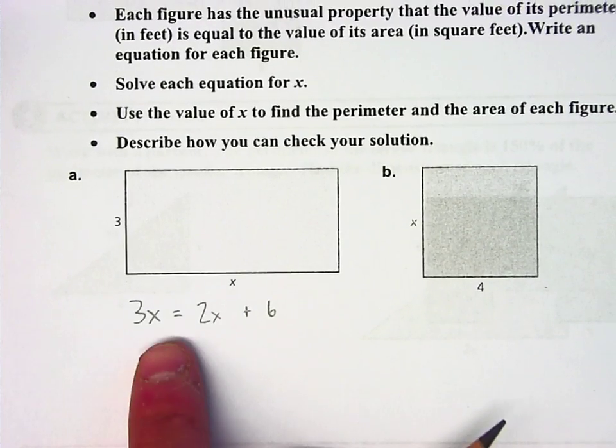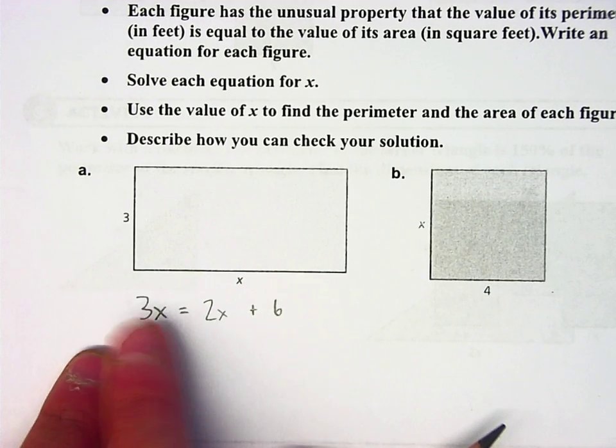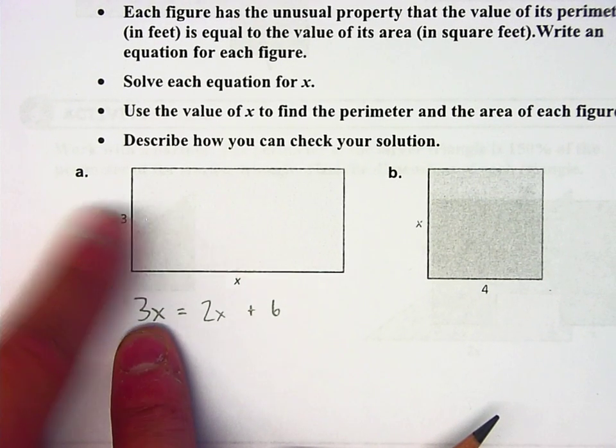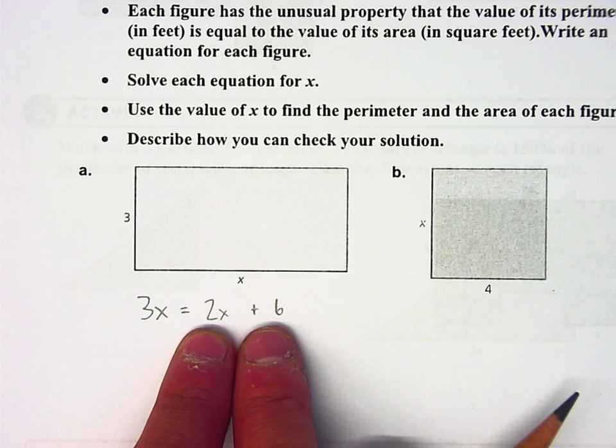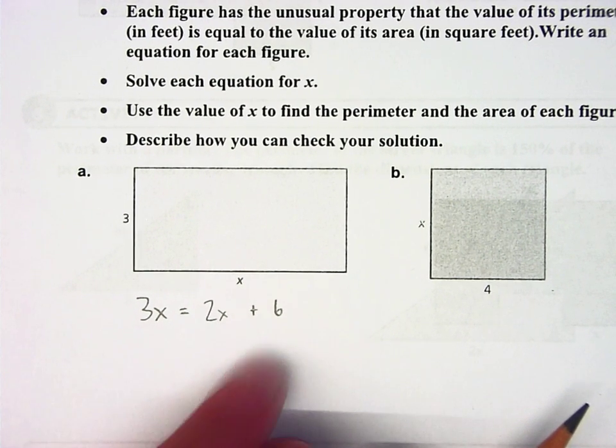So that allows me to set up an equation that looks like this. Area, here's an expression for the area, 3 times x is the area, is equal to an expression for the perimeter, which would be 2x plus 6.